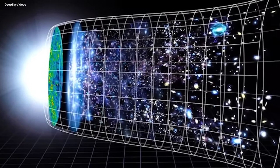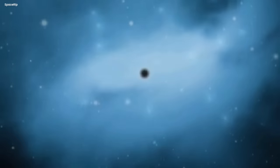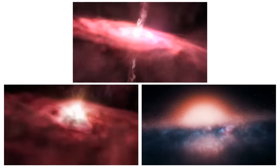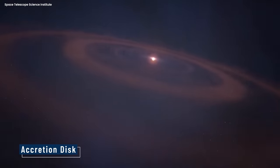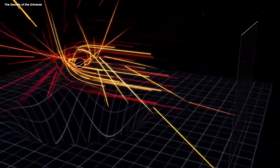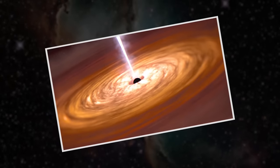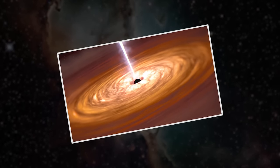Numerous theories have been put forth to elucidate their origins. One prominent hypothesis suggests that supermassive black holes develop from smaller black holes through a process known as accretion. According to this concept, as various forms of matter like gas, dust, and stars accumulate around a black hole, they form a swirling disk known as an accretion disk. The black hole's colossal gravitational pull draws material from this disk, causing it to spiral inward and ultimately merge with the black hole. Over vast stretches of time, this continuous influx of matter allows the black hole to expand into a supermassive scale.